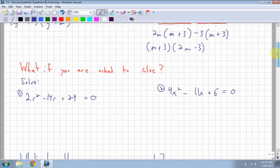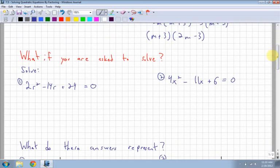What if we're asked to solve? So if I'm asked to solve, first thing I have to do is factor. So I notice there's a 2 in front of the r squared, but that 2 is common between 14 and 24. So I can actually factor it out. I'm left with r squared minus 7r plus 12 equals 0.